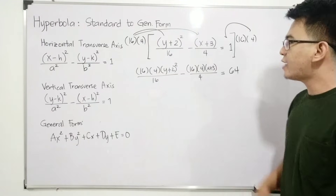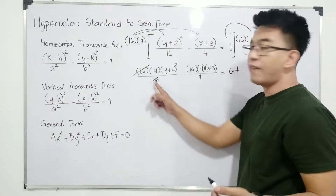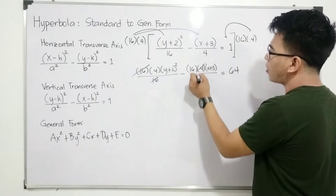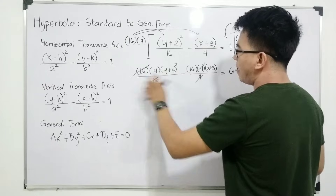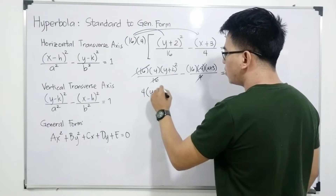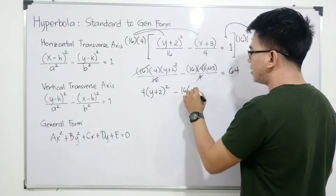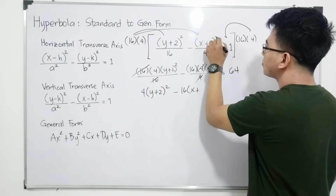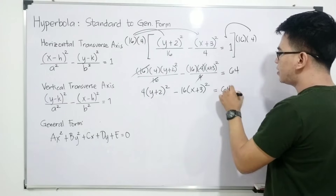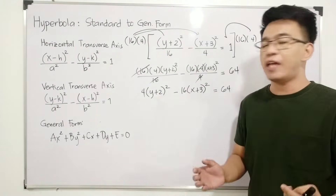We cancel out 16 divided by 16, and we cancel out 4 divided by 4. We now have: 4 times (y plus 2) squared minus 16 times (x plus 3) squared equals 64. There are no more denominators, and we are close to achieving the general form.